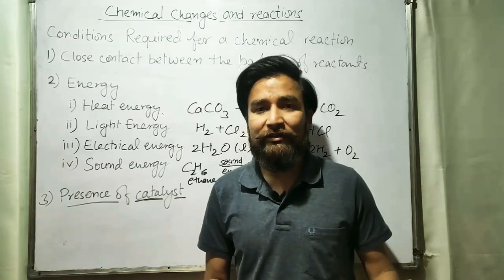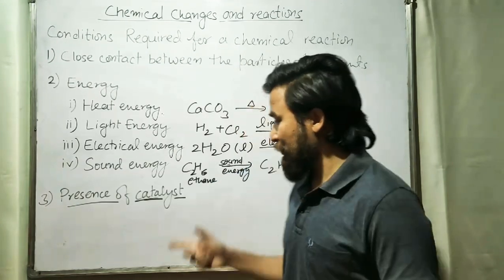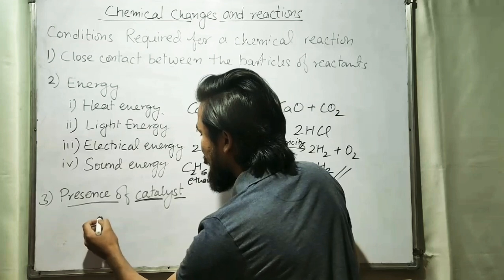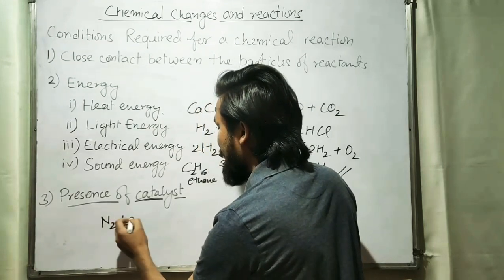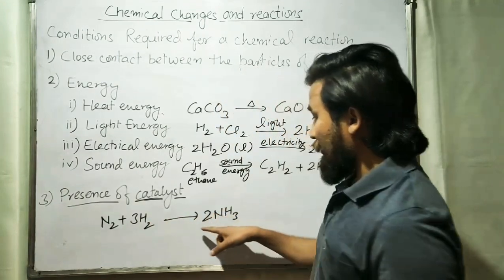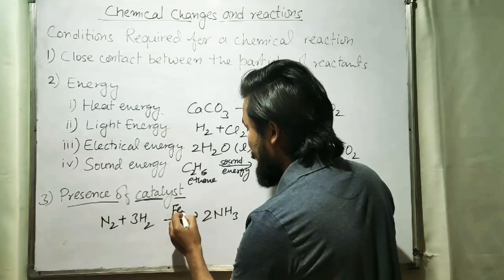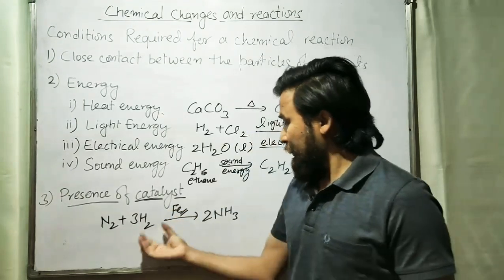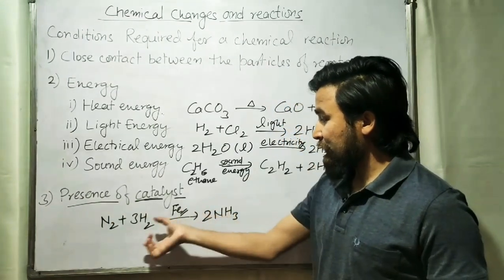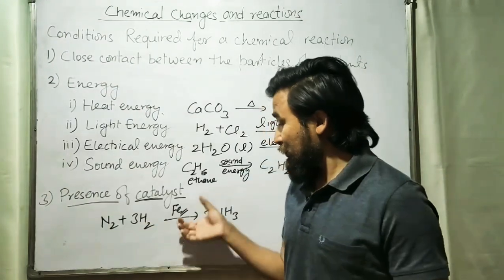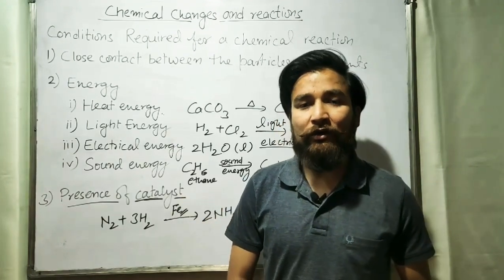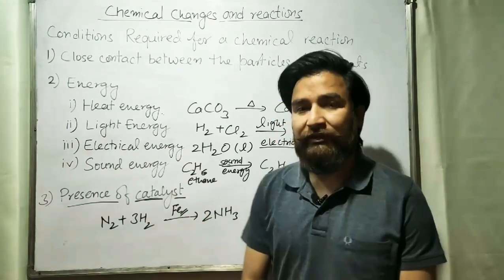If you are using a catalyst, the reaction may become very fast or very slow. For example, you have seen this reaction: N2 plus 3H2 forms NH3. For this reaction, the catalyst required is iron. Iron powder is used as a catalyst. If this reaction takes place in the presence of iron, the reaction becomes quite fast. Here iron is a catalyst. The catalyst may increase or decrease the rate of reaction depending on the different types of catalyst.